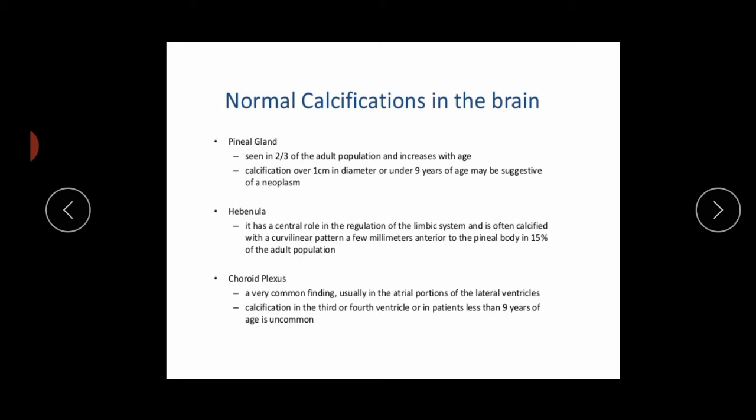The choroid plexus is a very common finding, usually in the atrial portion of the lateral ventricle. Calcifications in the third or fourth ventricle or in patients less than nine years of age is uncommon.